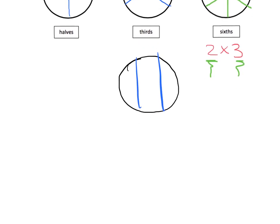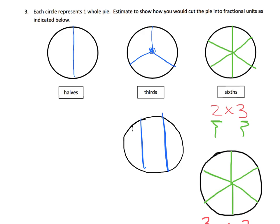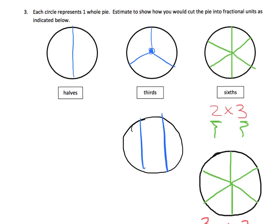Another way: multiplication is commutative, so we can think of it as three times two. Draw the three sections first, then cut each of those in half — and there are our six pieces. That's a trick you'll want to teach third graders for cutting a whole into fractions, especially with larger denominators like six, eight, or ten, using their multiplication facts.